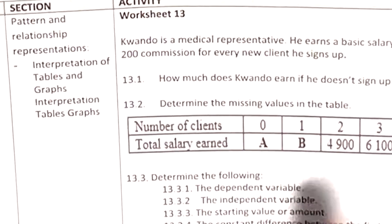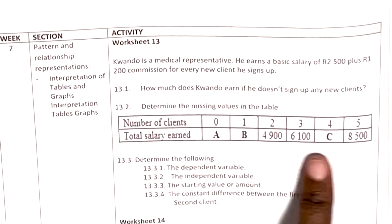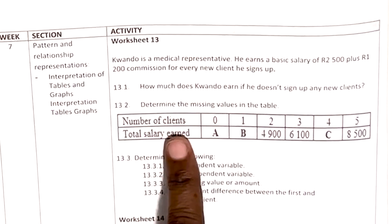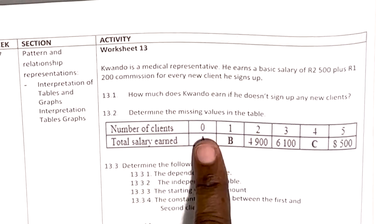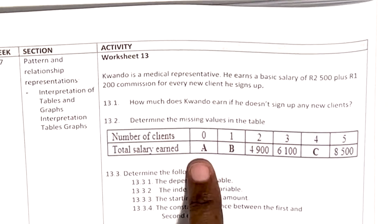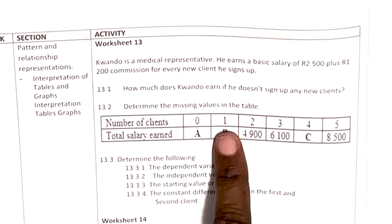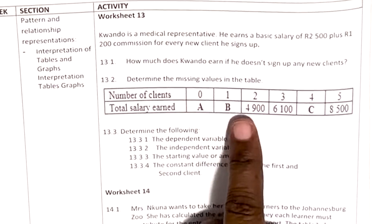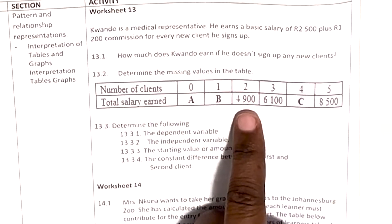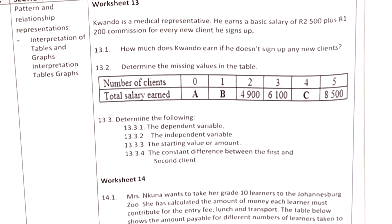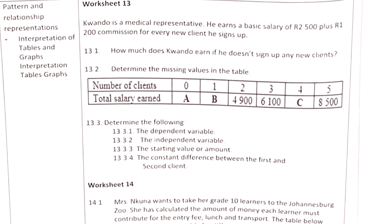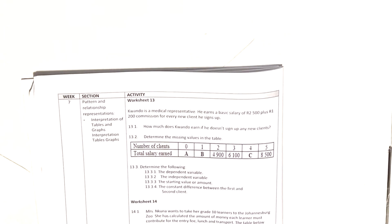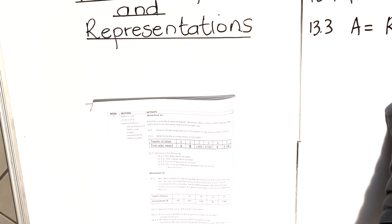For 13.2, we need to determine the missing values in the table. The top part of the table is number of clients and the bottom part is total salary earned. So if he gets no client, value A is R2 500 — that's his basic salary when he has no clients.